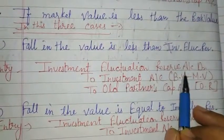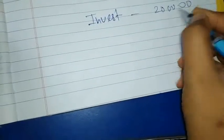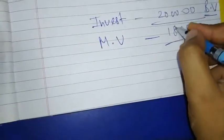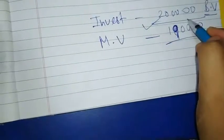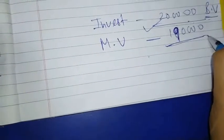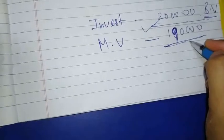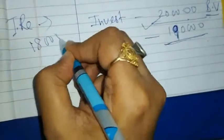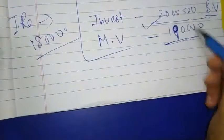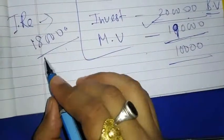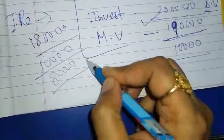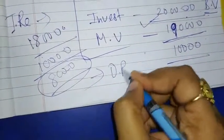Let's say the firm invested 2 lakhs - that is the book value - and the market value became 1 lakh 90,000. So the decrease is 10,000. The Investment Fluctuation Reserve has a balance of 18,000. From this 18,000, we use 10,000 to cover the fall in investment value. The remaining 8,000 balance is to be distributed among old partners in their old profit sharing ratio.